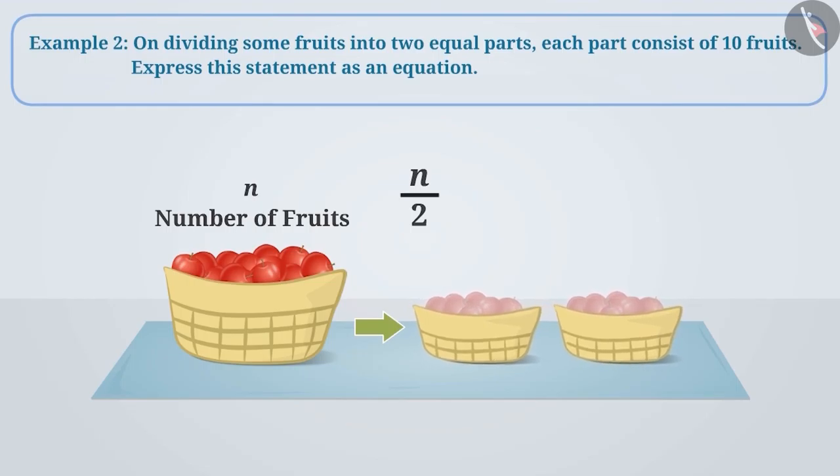In this way, the number of fruits in each part is n by 2. But we know that the number of fruits in each part is 10. This means the value of n by 2 is equal to 10.